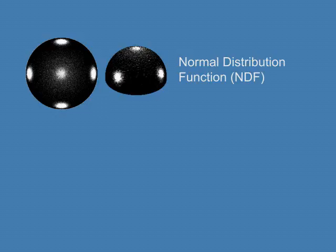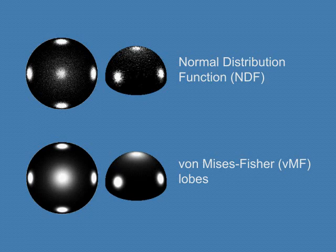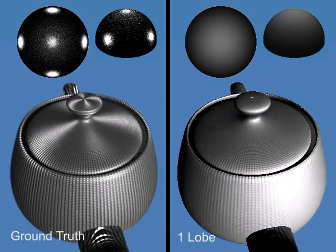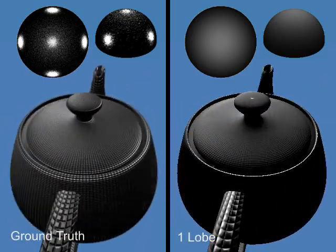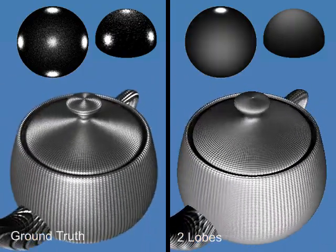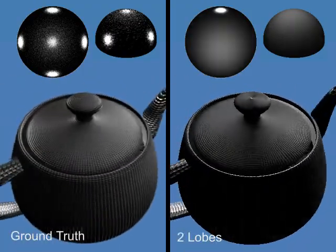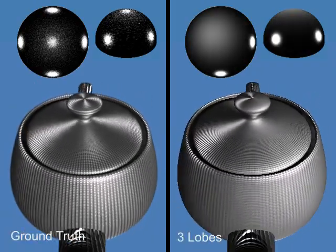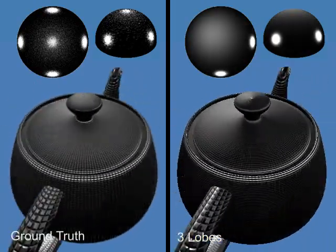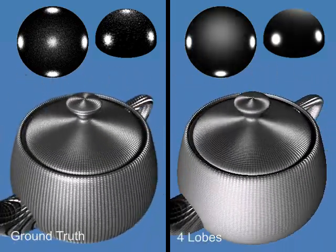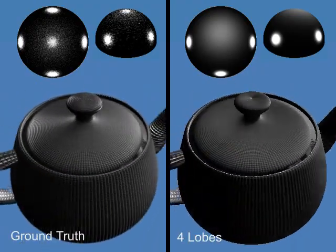For high-frequency BRDFs, we develop a novel algorithm in terms of spherical von Mises-Fischer distributions, also called VMFs. We have a normal distribution function at each texel in the normal map, to which we fit radially symmetric VMF lobes using spherical expectation maximization. Here, we have used increasing numbers of VMF lobes to represent the normal distribution of this teapot. At the top, we visualize the NDF of a representative texel in our normal map. As our NDF representation improves in accuracy, we are better able to capture details, such as the anisotropy on the lid.